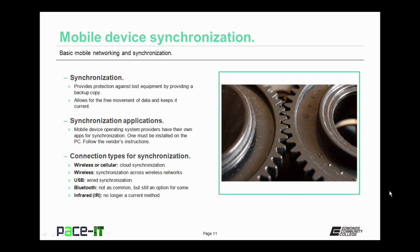There are several different connection types for synchronization. Many devices allow for wireless or cellular synchronization — that's synchronizing to the cloud. You can also synchronize across wireless networks. With many devices you can sync using a USB cable. With some devices you can use Bluetooth networking to sync with a PC or another mobile device, though it's not as common anymore. In the past, infrared was used to sync devices, but that's no longer a current method.